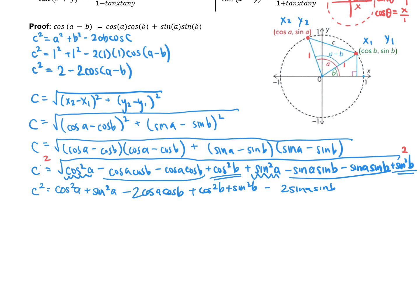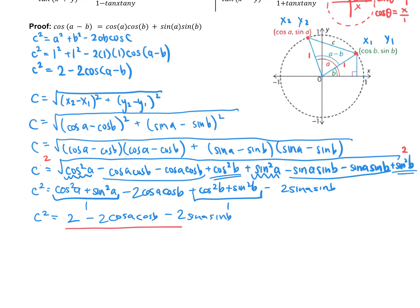cos²A + sin²A = 1, and cos²B + sin²B = 1, so that gives us 2 in total. Then we collect the remaining terms: −2cosA·cosB − 2sinA·sinB. So C² = 2 − 2cosA·cosB − 2sinA·sinB. That's as far as we can simplify.